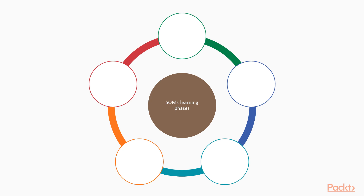We can also describe the phases in a way that is more helpful for implementing the algorithm. These phases include: random initialization of the weights; sampling of the training samples, which means going through all the samples randomly in each iteration; matching, which means finding the winner and the topological neighbors of the winner; updating, which helps update the weight values according to a specific equation; and finally, the continuation, or convergence step.